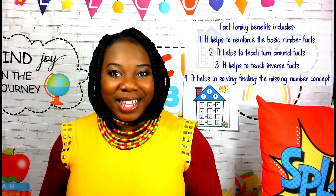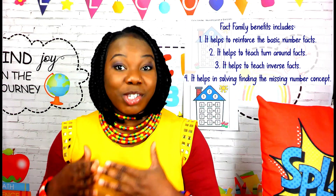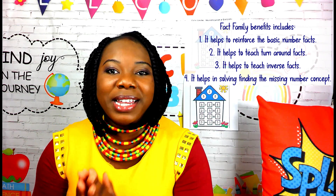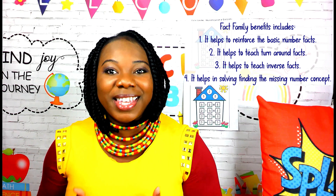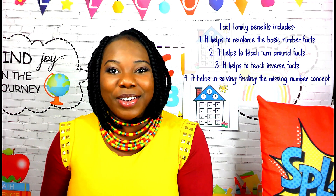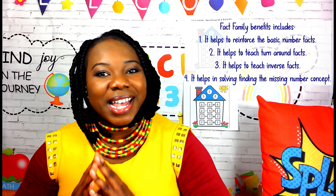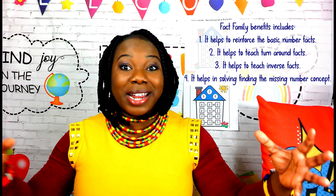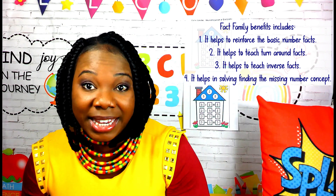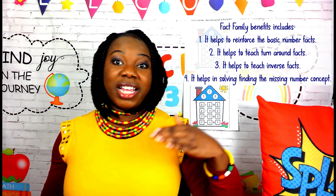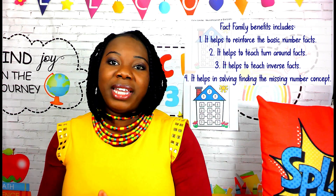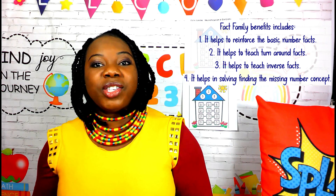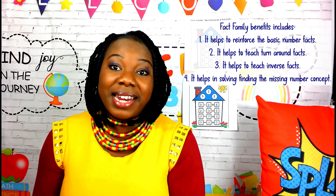Fact families help strengthen the concept of turnaround facts and also the concept of inverse facts. Fact families further help strengthen the concept of finding the missing addend. Once an elementary learner is proficient in understanding how addition and subtraction facts are related, and also how multiplication and division facts are related, they are able to apply mental math skills to solve problems that require finding the missing addend.